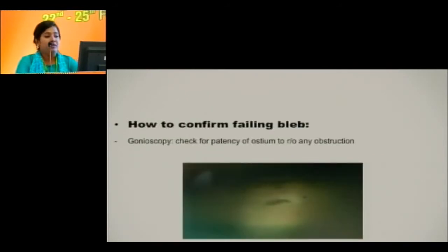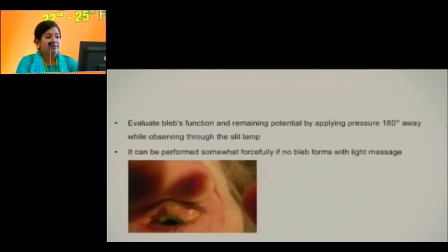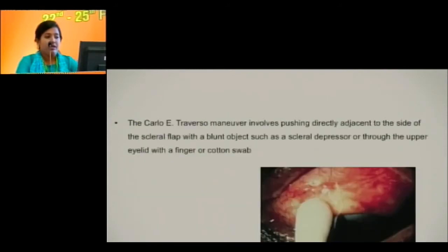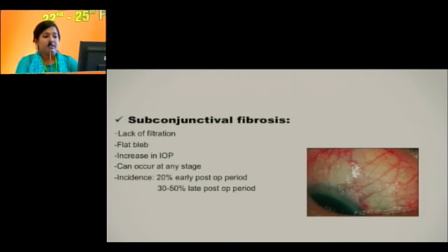To confirm a failing bleb, we first need to rule out blockage of the ostium with vitreous or blood clot, which may happen in the early post-op period. Evaluate the bleb's function and remaining potential by applying pressure 180 degrees away while observing through the slit lamp. We can also use a Zeiss traversal maneuver, pushing directly adjacent to the side of the scleral flap with a blunt object such as a scleral depressor or through the upper eyelid. Bleb flattening due to fibrosis causes lack of filtration and increase in IOP; incidence is 20% in early post-op period and 30% to 50% in late post-op period.